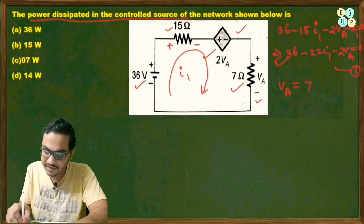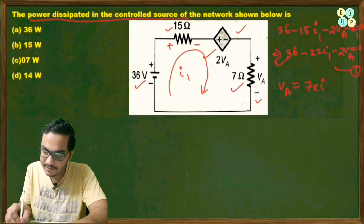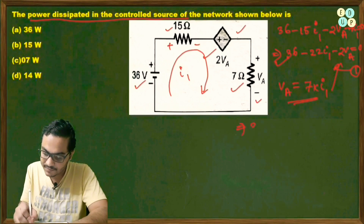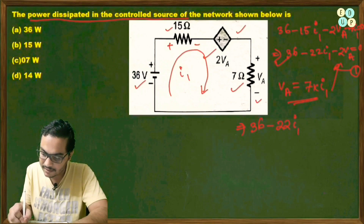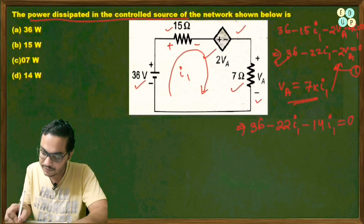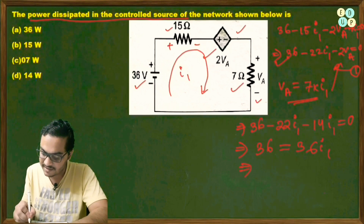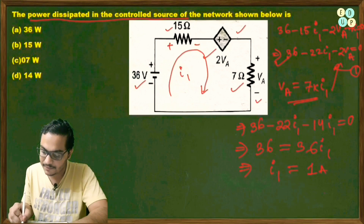Applying Ohm's law: Va = 7·i1. Substituting into Equation 1: 36 minus 22·i1 minus 14·i1 = 0, which gives 36 = 36·i1, so i1 = 1 ampere.